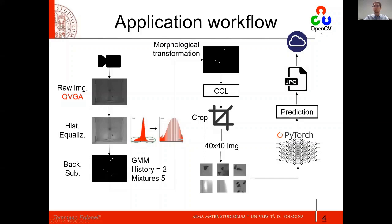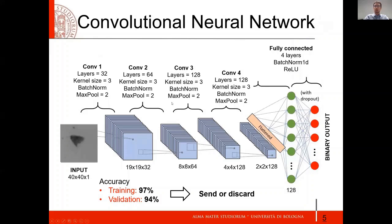After that, we apply a connected component library procedure from OpenCV, which crops tiny images of about 40 by 40 pixels that could include insects or other stuff like light reflections. To discriminate dangerous insects from useless detections, we use a neural network — a PyTorch-based one — with a binary output: zero or one, yes or no. If we detect a dangerous insect, we compress the image with our JPEG codec and stream it to the cloud.